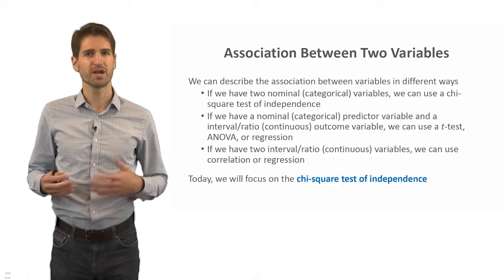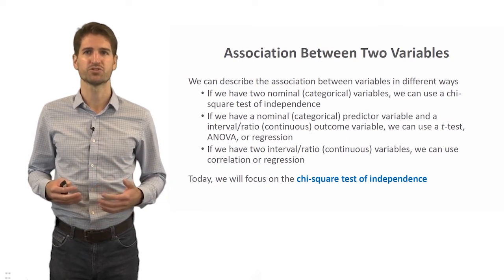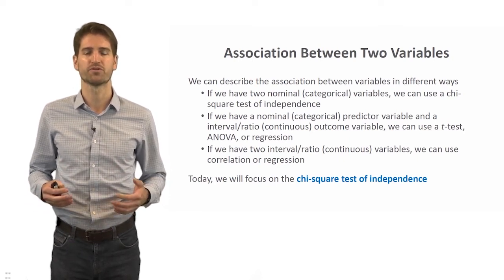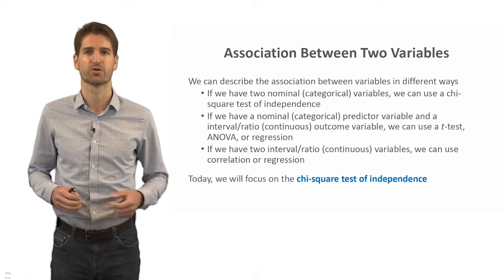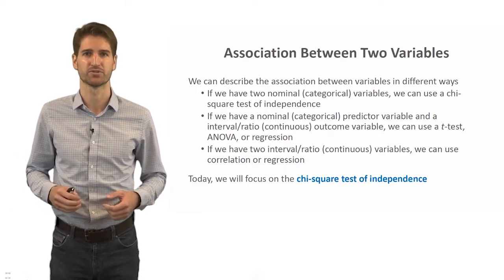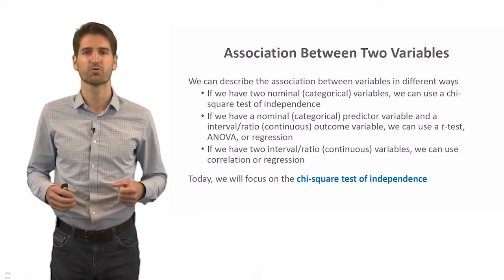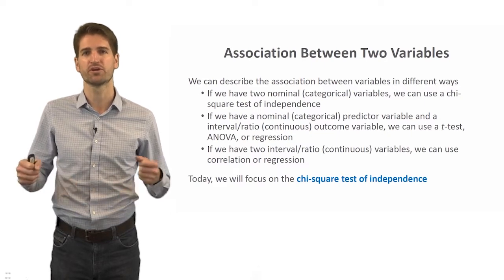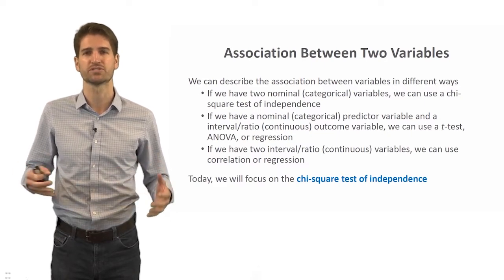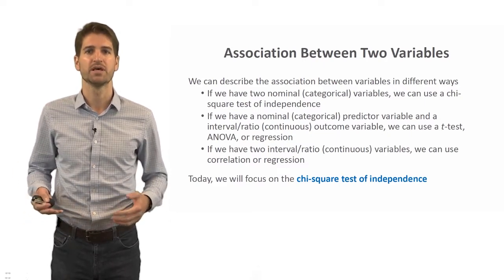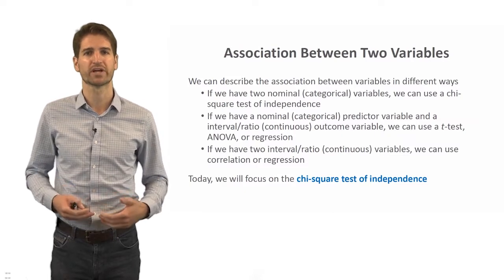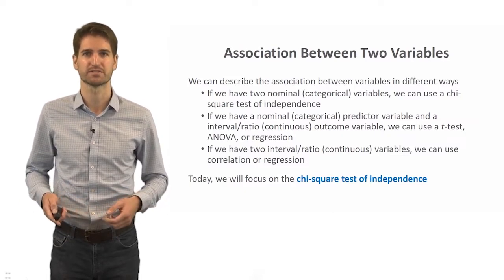We can describe the association between two variables in different ways. In this lecture, we're going to focus on the association between two categorical variables — in other words, two variables that represent frequencies or counts in different categories. Specifically, we're going to focus on the Chi-Square Test of Independence.